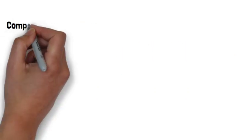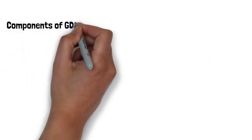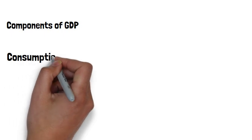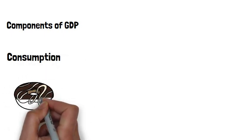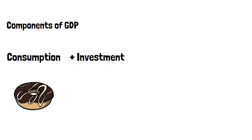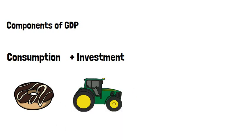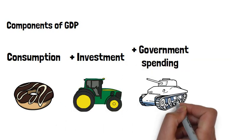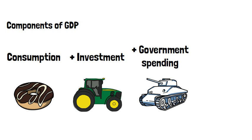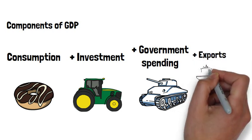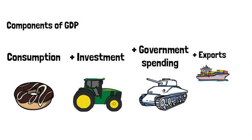The way that GDP is measured is by identifying all spending in an economy. This includes consumption by households, investments by companies on things like machines and equipment, and government spending on goods and services. We then add exports, since these are produced at home but consumed abroad.